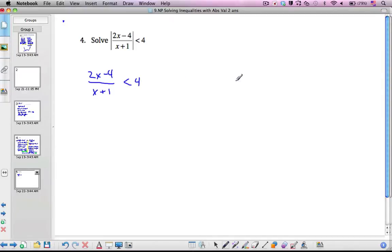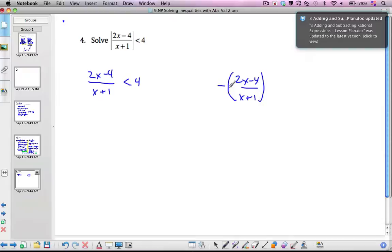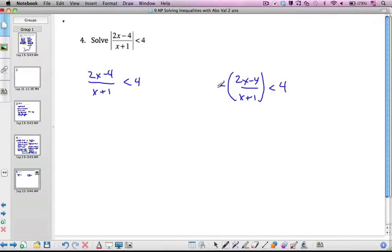However, if it is negative, then in order to take this negative value and make it positive, I have to multiply it by a negative value. So now this is positive and it's less than 4.